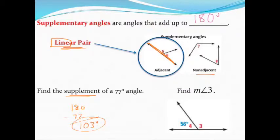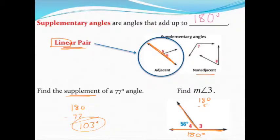In the second example, they ask us to find a missing angle and nothing says it's supplementary, but notice these two angles together make a straight line. Straight lines form a linear pair — they're 180 degrees — so these angles are supplementary. We'll do 180 minus 56 to come up with a missing angle of 124 degrees.